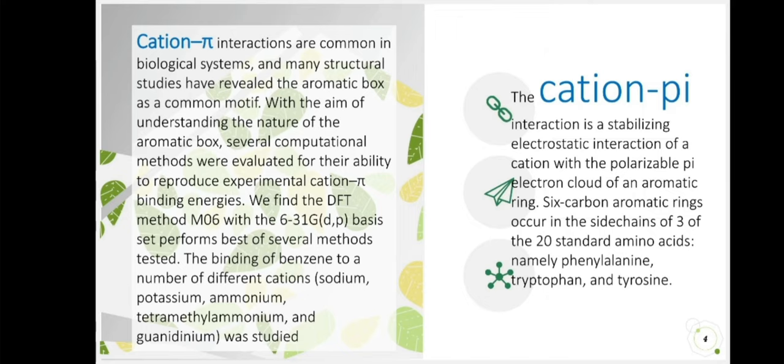Let's talk about cation-pi. Cation-pi interactions are common in biological systems and many structural studies have revealed the aromatic box as a common motif. With the aim of understanding the nature of the aromatic box, several computational methods were evaluated for their ability to reproduce experimental cation-pi binding energies. The binding of benzene to a number of different cations, sodium, potassium, ammonium, tetramethyl ammonium, and guanidininium was studied.